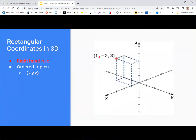So if we had the point 1, negative 2, 3, that would be 1 in the x-direction, positive x, negative 2 in the y-direction, and then 3 in the z-direction to get to that point.